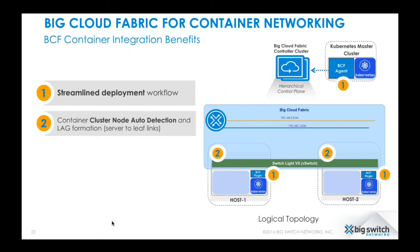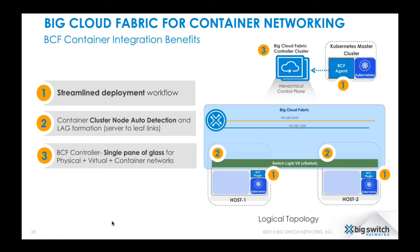Once you install it, as Prashant mentioned, we auto-detect all cluster nodes and form link aggregation towards the server from the physical leaf switches. The entire thing is automated — there is no manual configuration required to provision or add cluster nodes to the physical fabric. No user error. And once you have all the virtual switches installed, you now have a single pane of glass for physical, virtual, and container networking. This makes the administrator's life simpler for monitoring and troubleshooting the entire networking for containers.